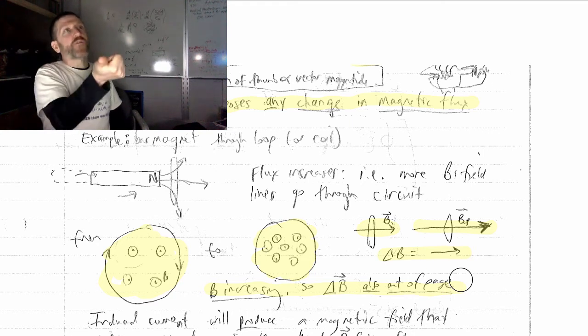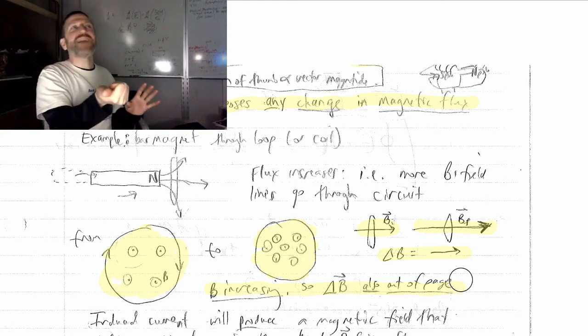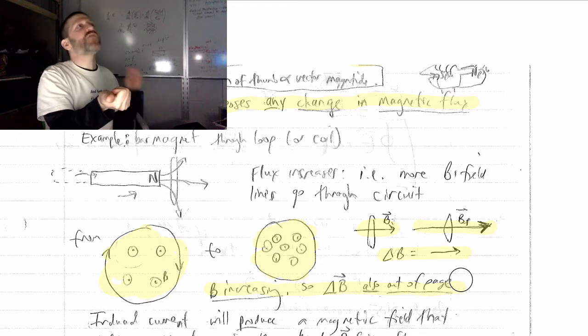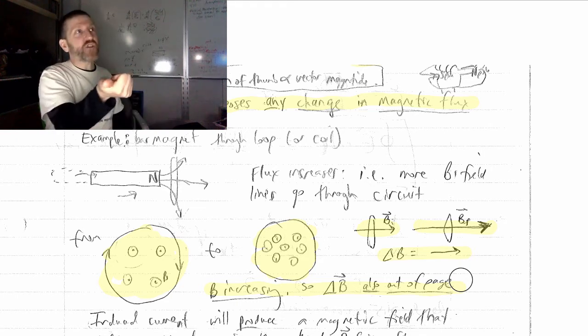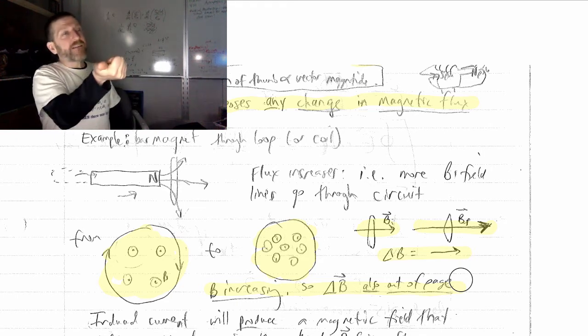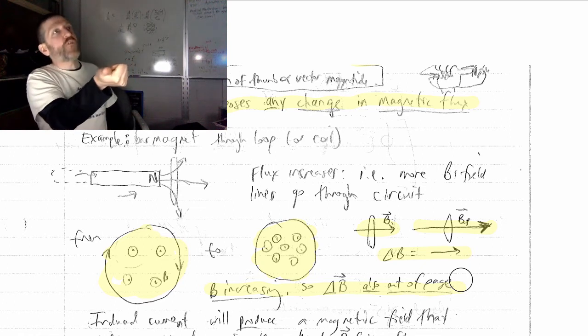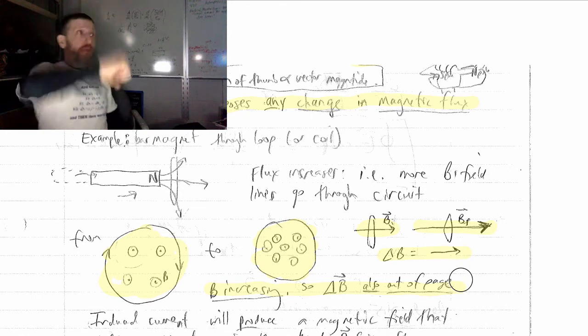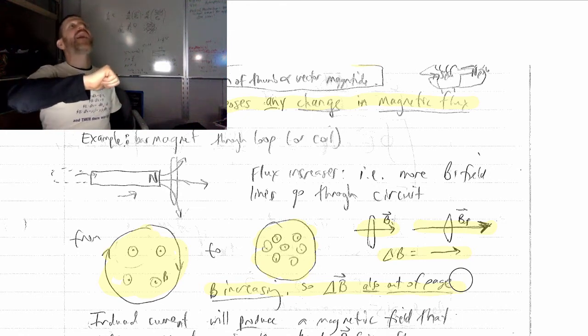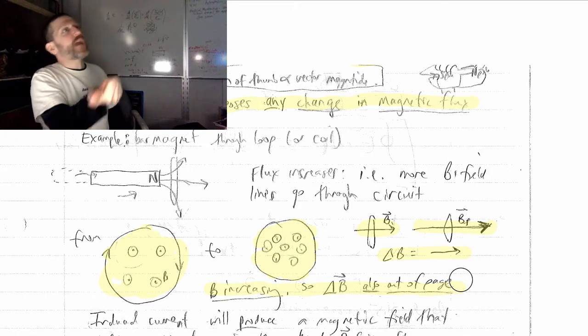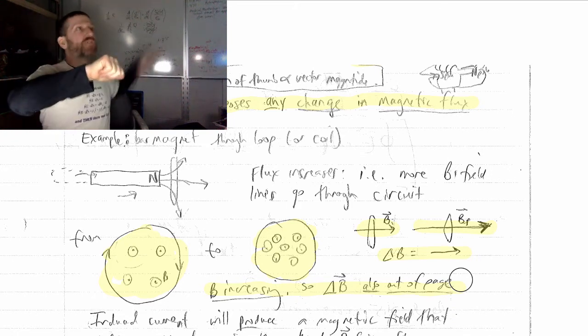So nature is going to try to induce a current. Here is the direction of our change. Nature is going to try to produce a flux that is pointed the opposite way. So what you do is, once you figure out the direction of the change, and be careful, it's not the direction of the field. It's the direction of the change. Once you figure out that, by looking at which way your thumb is moving, nature is going to try to oppose that change. So you flip it to the opposite direction as the direction of the change. So it was towards you, so we got to flip it to away from you, towards the screen.